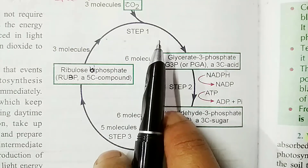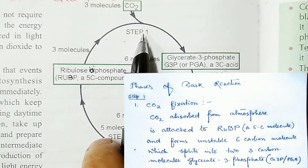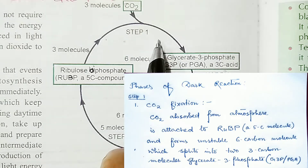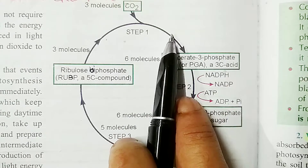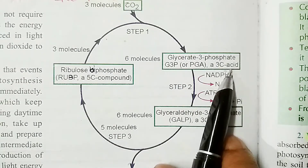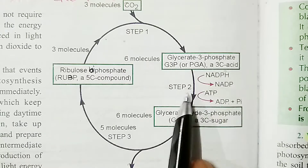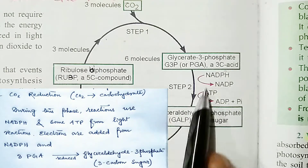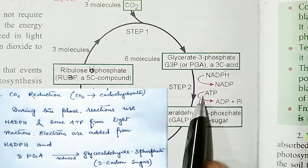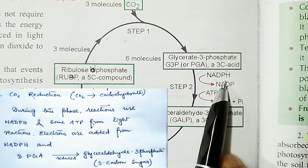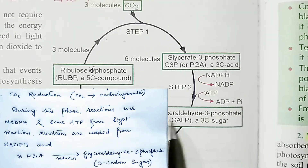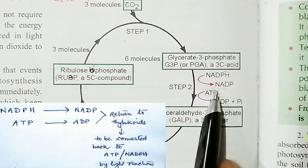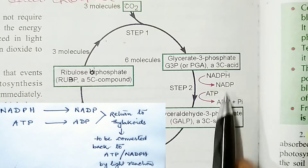In the first step — carbon dioxide fixation — carbon dioxide absorbed from the atmosphere is attached to RuBP. RuBP is a 5-carbon molecule, and together carbon dioxide and RuBP form a 6-carbon molecule. That 6-carbon molecule is very unstable and splits to form a 3-carbon molecule called glycerate 3-phosphate. In the second step — carbon dioxide reduction — carbon dioxide slowly converts to carbohydrate. During this phase, reactions use NADPH and some ATP. Electrons are added from NADPH and glycerate 3-phosphate converts to glyceraldehyde 3-phosphate, which is a 3-carbon sugar. During this process, NADPH converts to NADP and some ATP converts to ADP.